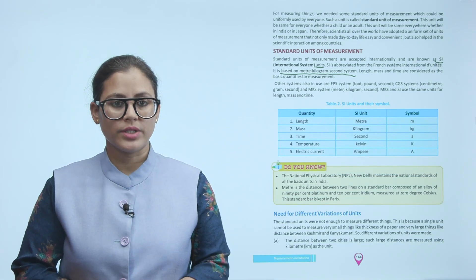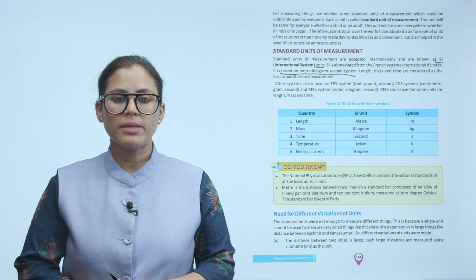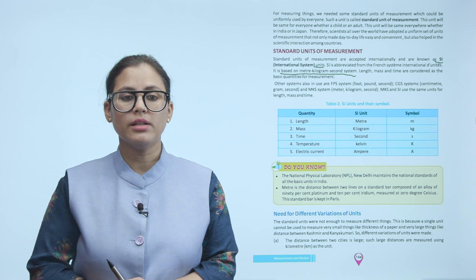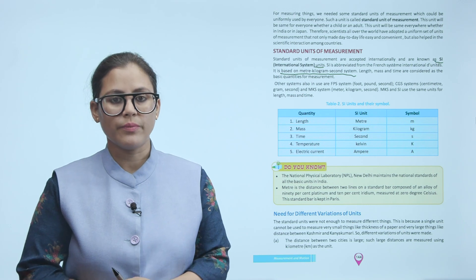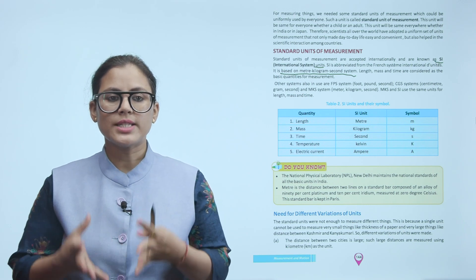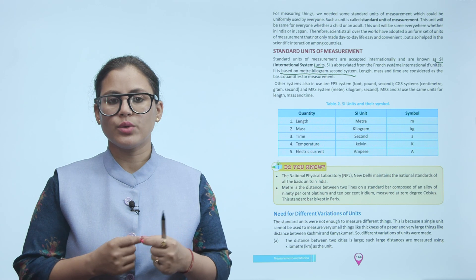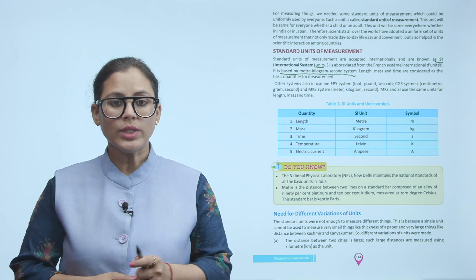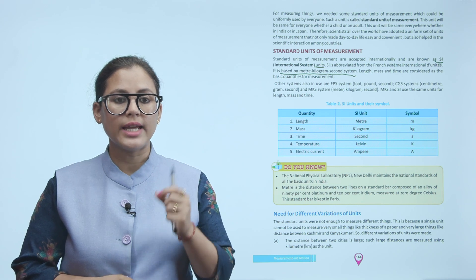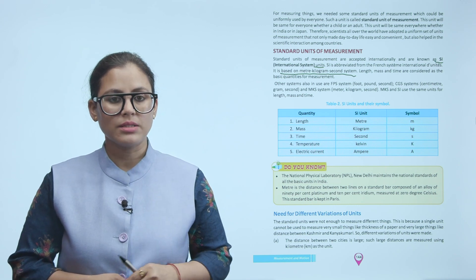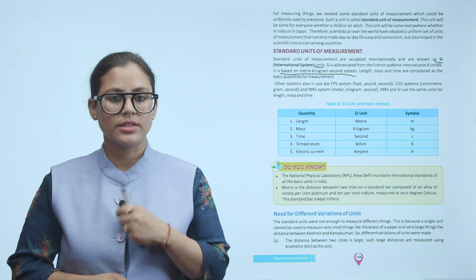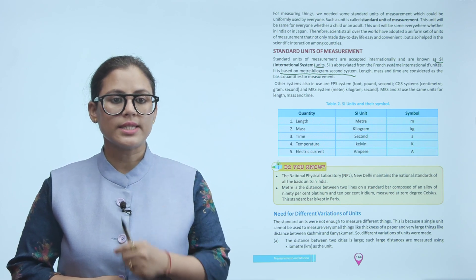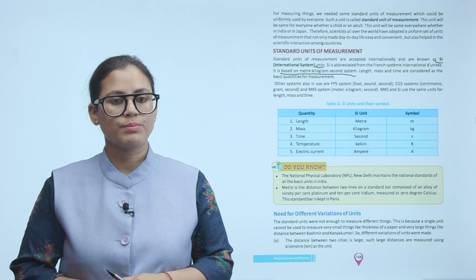Do you know? The National Physical Laboratory (NPL), New Delhi, maintains the national standard of all the basic units of India. A meter is the distance between two lines on a standard bar composed of an alloy of 90% platinum and 10% iridium, measured at zero degrees Celsius. This standard bar is kept in Paris.